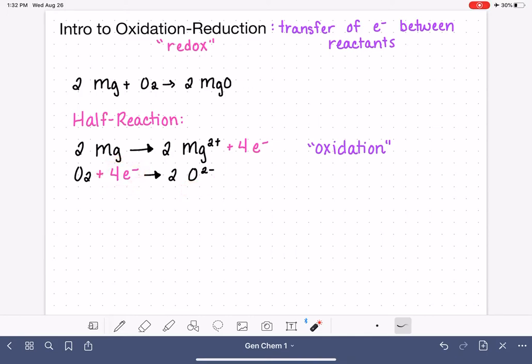Four electrons being spread out over those two atoms means that each one gets a negative two charge, which we know is consistent for oxygen because of where it's located on the periodic table. So this half of the redox reaction is the reduction process.